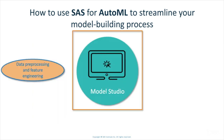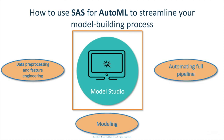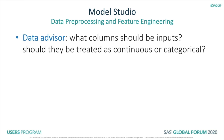In the latest release of Model Studio, we have some automation enhancements in the areas of data preprocessing and feature engineering, modeling, and full pipeline automation. For data preprocessing and feature engineering, some automation that has been in all releases of Model Studio includes the data advisor that determines if columns of your data are inputs, IDs, or variables to be excluded from your model, and if they should be treated as categorical or continuous.